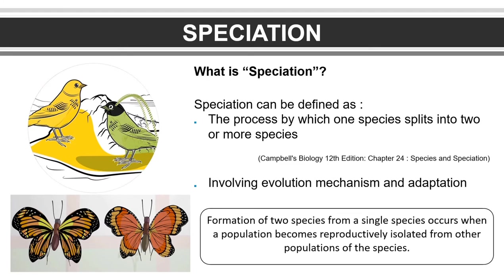Formation of two species from a single species occurs when a population becomes reproductively isolated from other populations of the species.